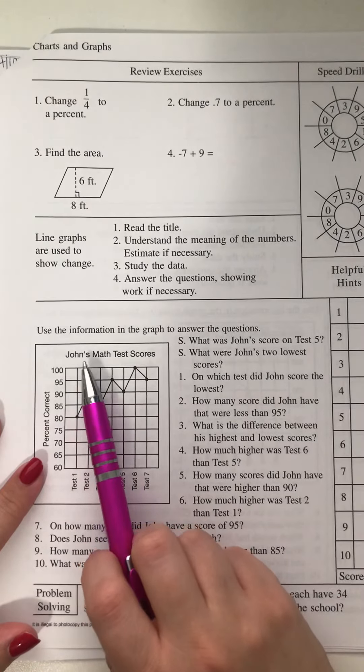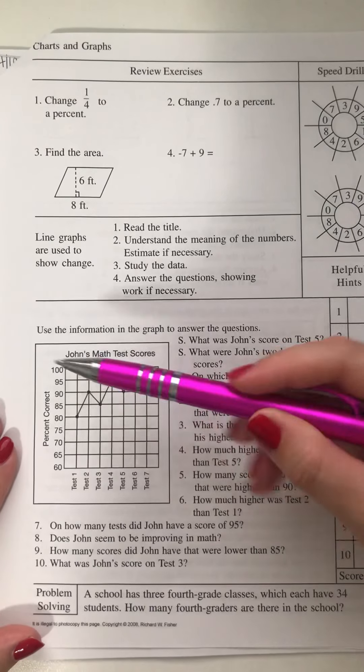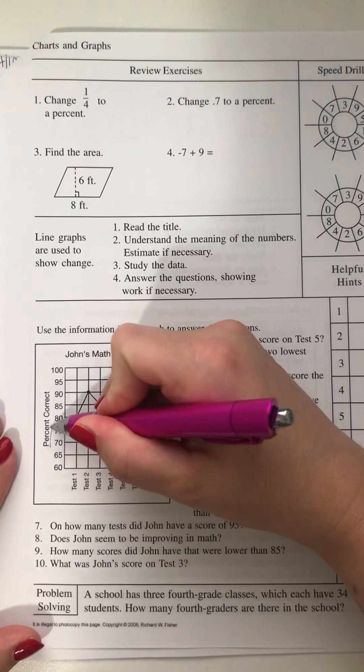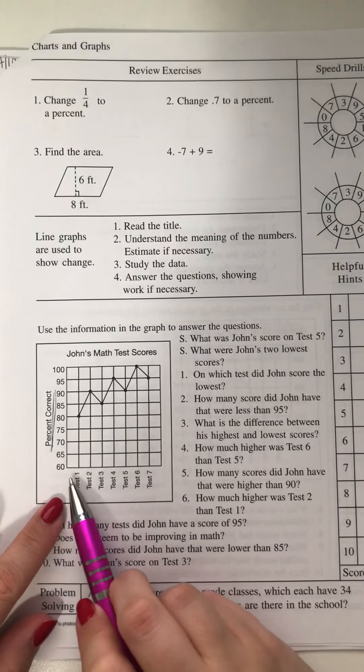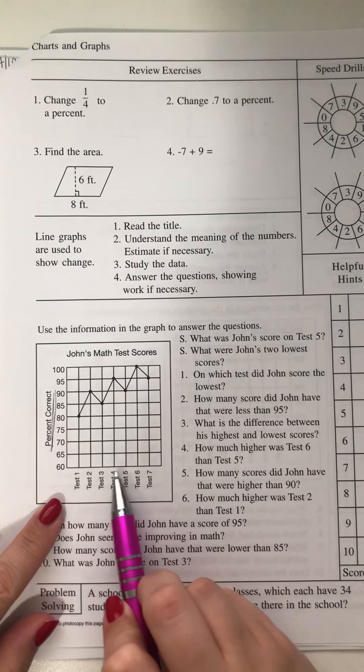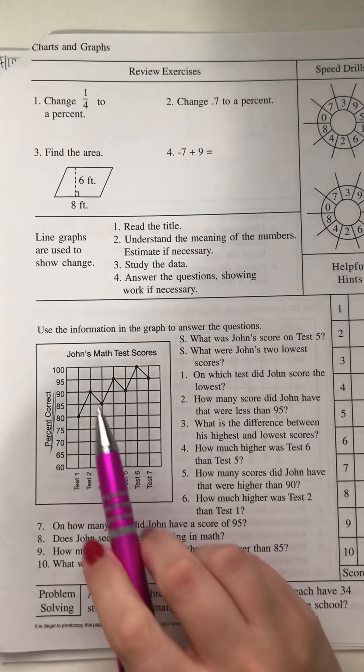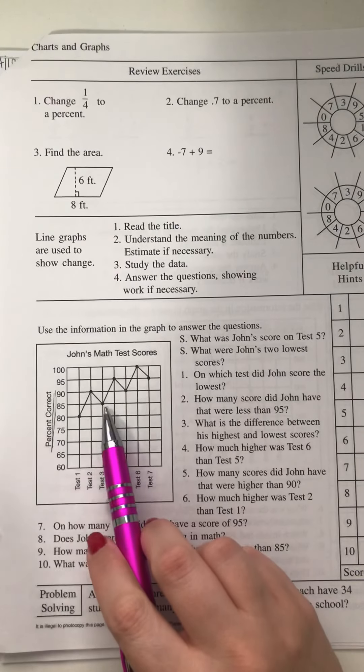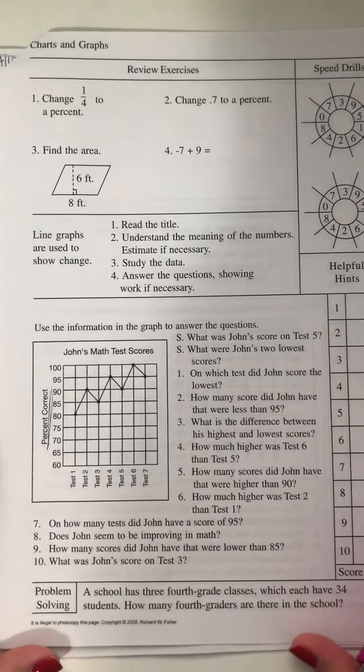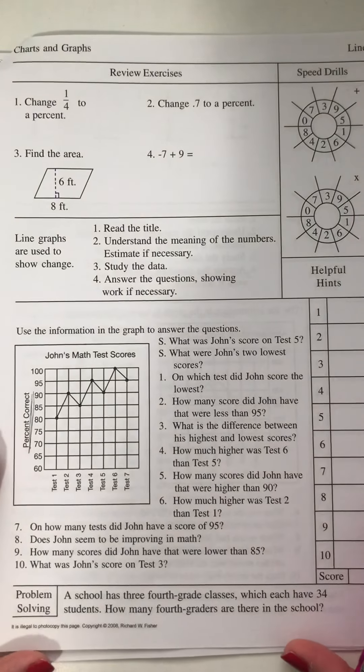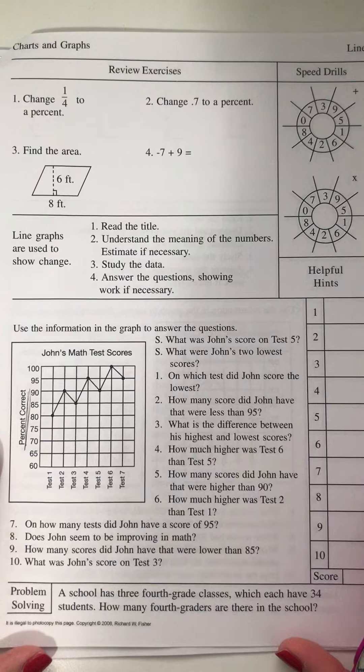So here we have an example of John's math test scores. Here we have all of the percentages of correct responses, the percent correct. And then here we have all of the different tests that John took. So we're going to use these dots and these lines that show increases or decreases to answer our questions.